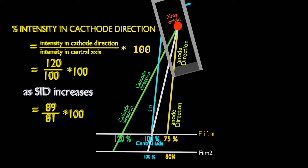Ultimately, at cathode side intensity will be from 120 to 110%. So, with increase in source to image distance, film to x-ray source distance increases more in cathode side than anode side. This unequal increase in distance reduces heel effect.